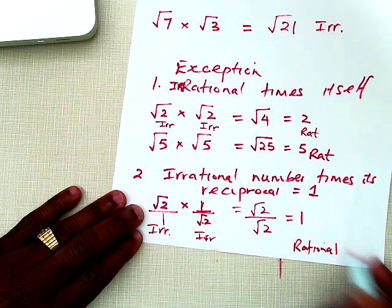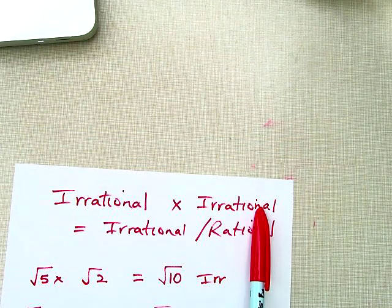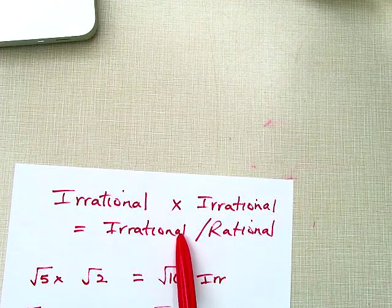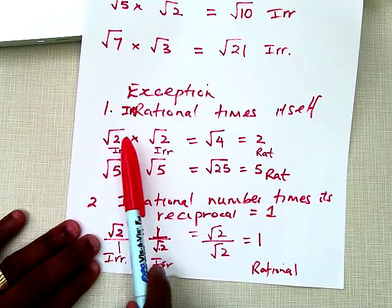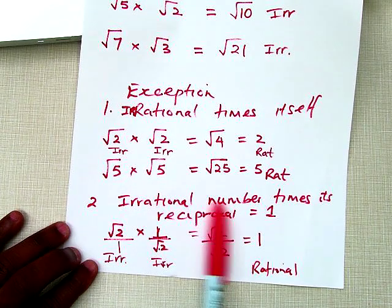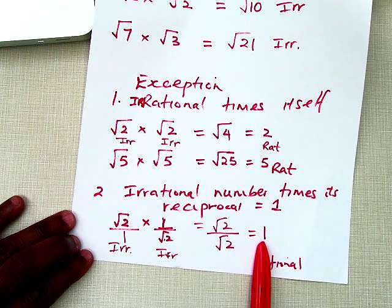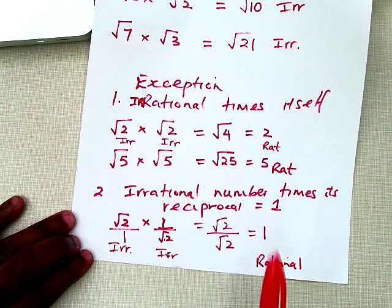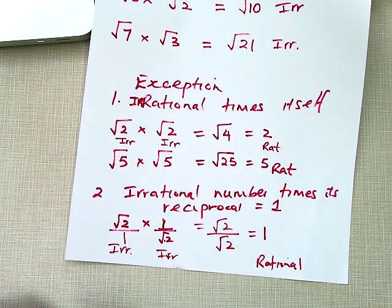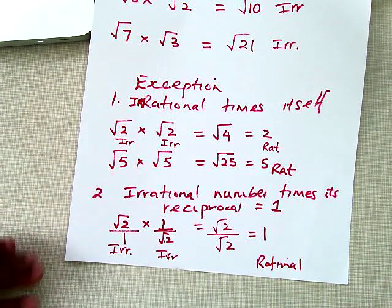To summarize: when you multiply irrational times irrational, most times you get another irrational number. The exceptions are when you multiply the irrational number by itself, or when you multiply it by its reciprocal and get 1. I hope this helps you figure out what happens when you find the sum or product of rational and irrational numbers.